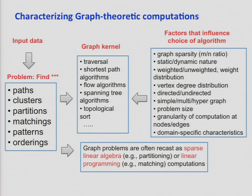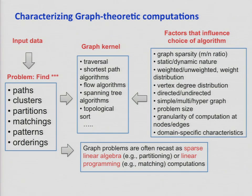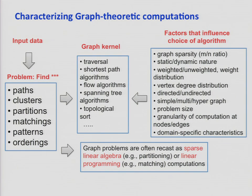There are other things that influence the choice of the right algorithm beyond architecture. It's about how sparse the graph is — algorithms for dense graphs are totally different from those for sparse graphs. Whether the graph is static or changing, whether new edges or vertices are coming. What the vertex degree distribution is — if it's too skewed, it's hard to get load balance in parallel computing, but if uniform, you don't need to worry.